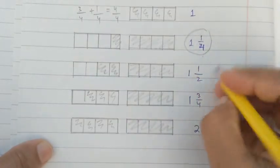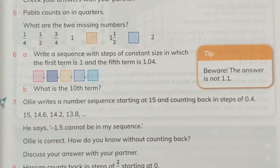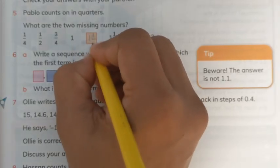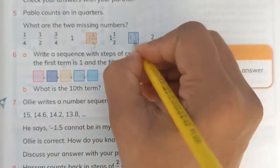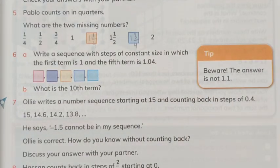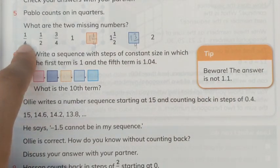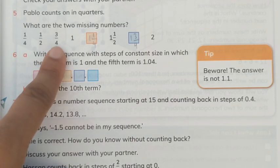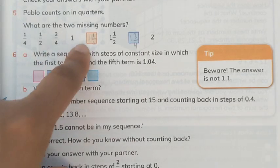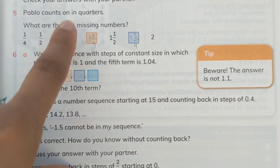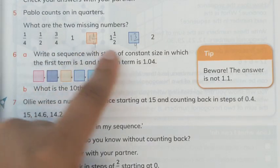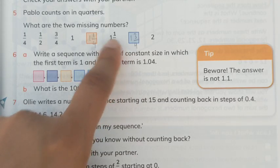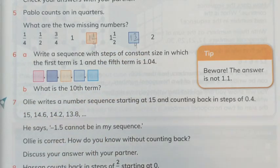Every time we are adding 1/4 to the previous term. So the missing numbers are 1 whole 1/4 and 1 whole 3/4. We write 1 whole 1/4 in the first blank and 1 whole 3/4 in the next blank. Since the first term was 1/4 and we add 1/4 each time, I will add 1/4 to 1 to get the next term, and add 1/4 to 1 whole 1/2 to get the following term.